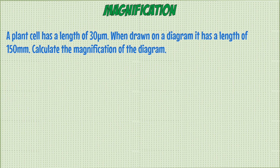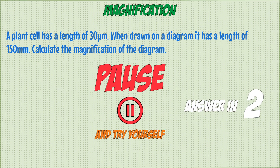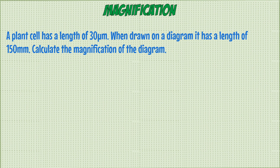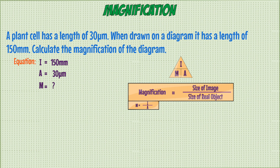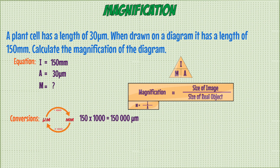Now let's look at an example. We have a plant cell with a length of 30 micrometers, and when drawn on a diagram the length is 150 millimeters. Calculate the magnification of the diagram. First, write down the information: image size = 150 mm, actual size = 30 μm. We use the equation: image size over actual size. Before substituting, we check units — we convert 150 mm to micrometers by multiplying by 1,000, giving 150,000 μm. So magnification = 150,000 ÷ 30 = 5,000×.